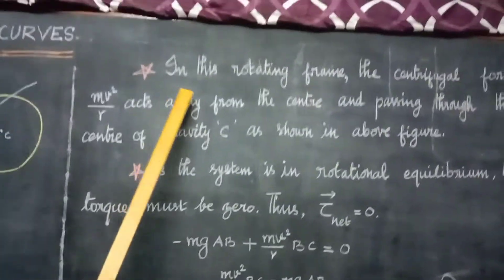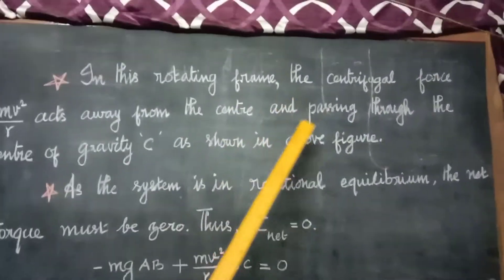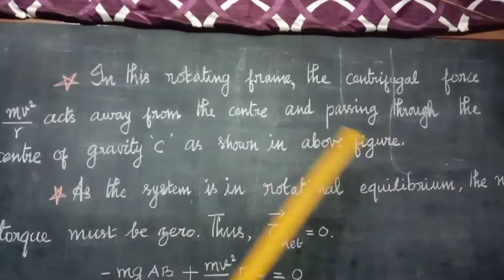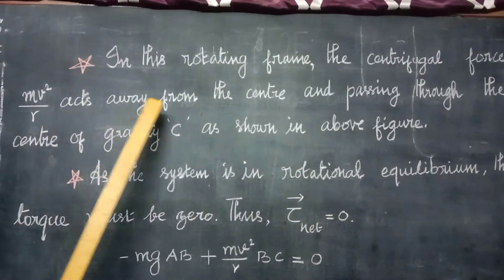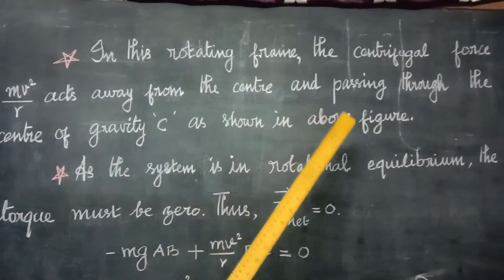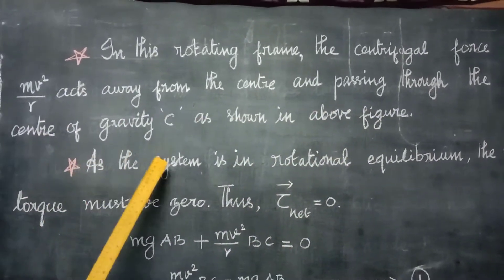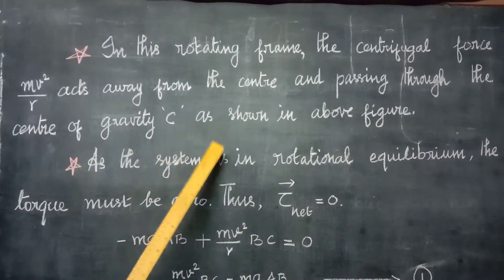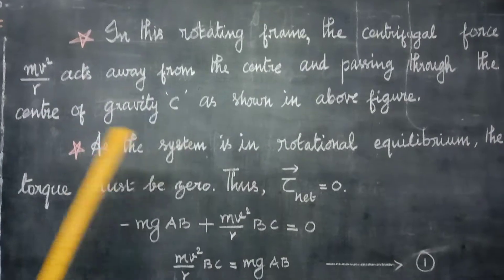In this rotating frame, the centrifugal force Mv²/R acts away from the center and passes through the center of gravity C, as shown in the figure.